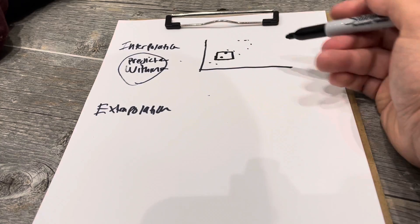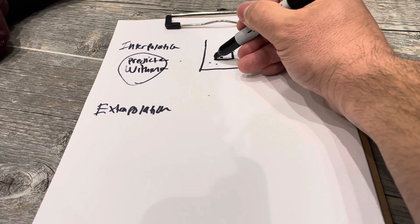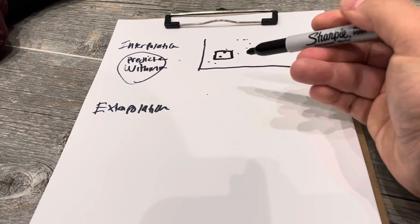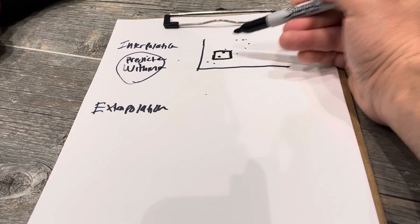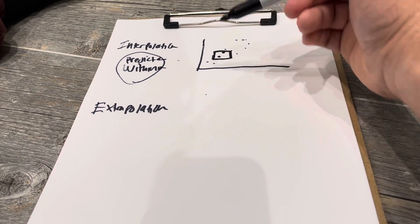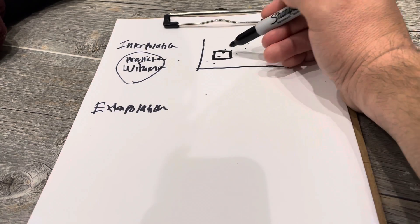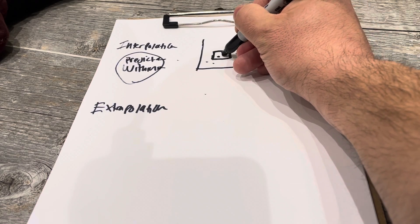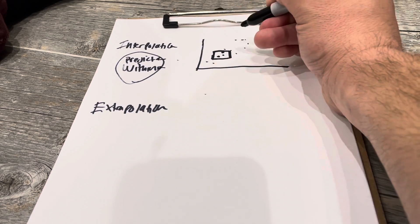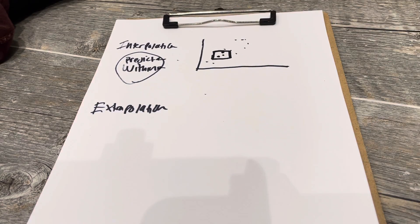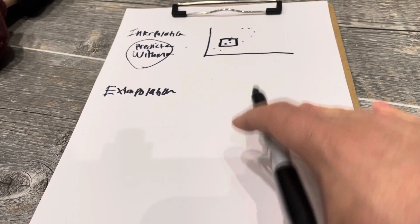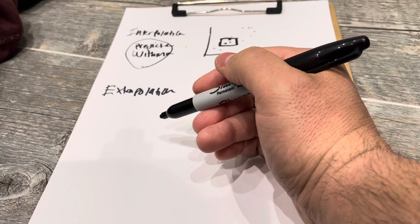Within means within the points that you already have. Take those two words and you know what interpolation is: you are looking within the data and making an educated guess as to what else would be there. So I would predict there would be an additional point right here — that extra point would be an interpolation prediction. Very simple.